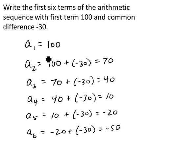So our first six terms there are 100, and then 70, 40, 10, negative 20, and negative 50.